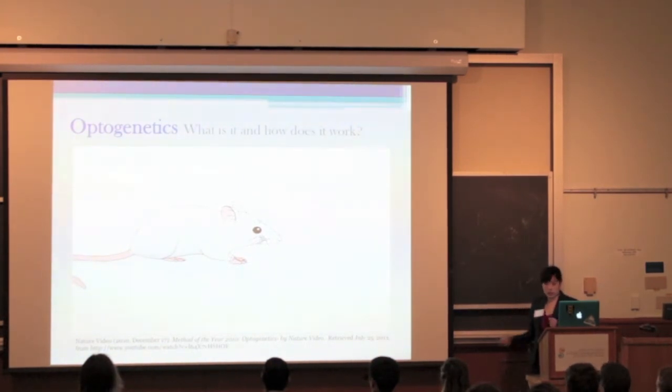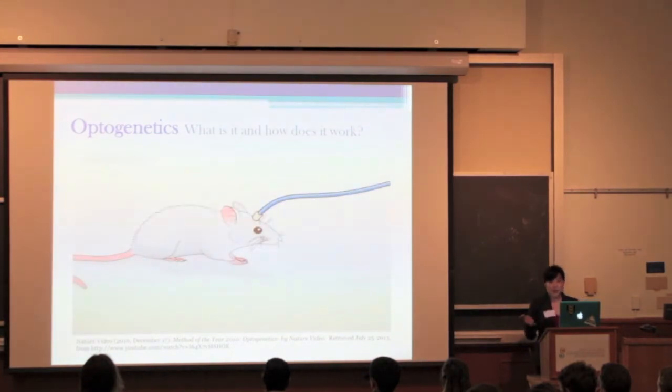The virus will then express the protein, so that we can selectively stimulate the BLA using light, to see if the basolateral amygdala is related to prosocial behavior. Cool, right? There's a whole video at Nature, if you're interested in their explanation of the entire process.